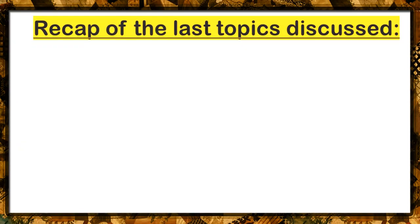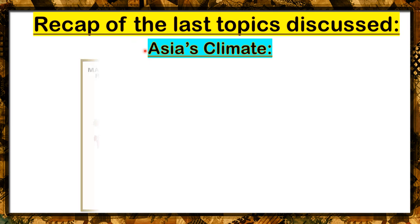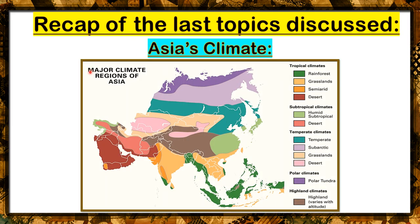Before we proceed to our discussion, I would like us to have a short review or recap of the last topics discussed, which is about Asia's climate. There are major climate regions of Asia, and they are the following: tropical climates, subtropical climates, temperate climates, polar climates, and highland climates. These colors represent the climate of each place present on this map.